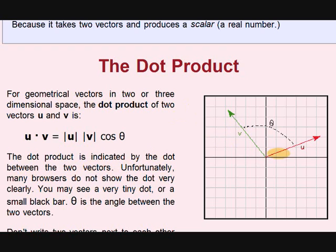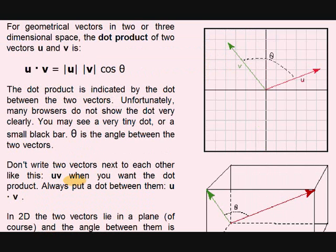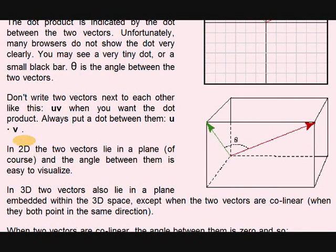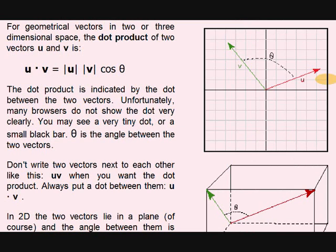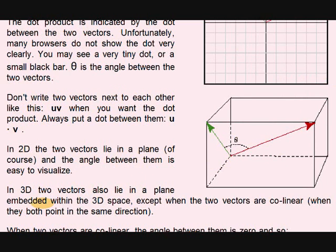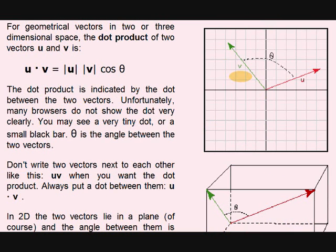The dot product is indicated by the dot between the two vectors. Unfortunately, many browsers do not show the dot very clearly. In two-dimensional picture, the two vectors lie in a plane. You see here, the XY axis. Assume in 3D, two vectors lie in a plane.